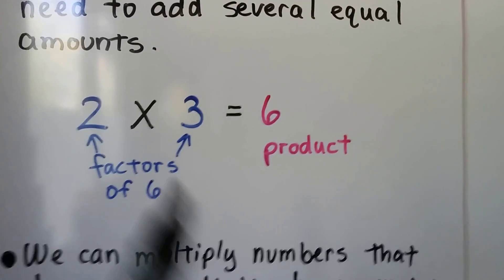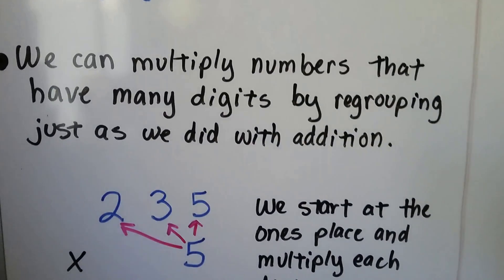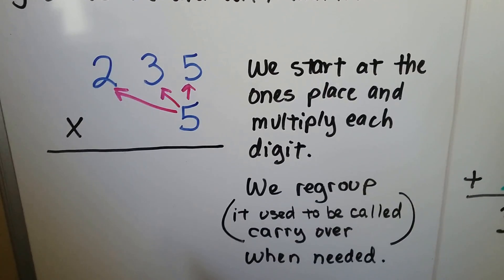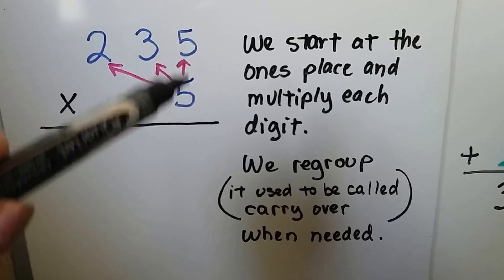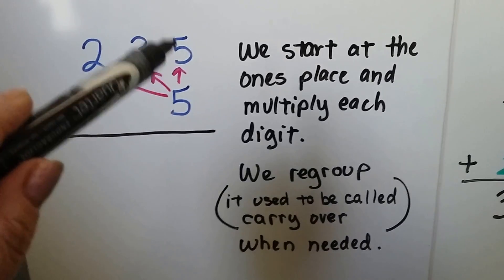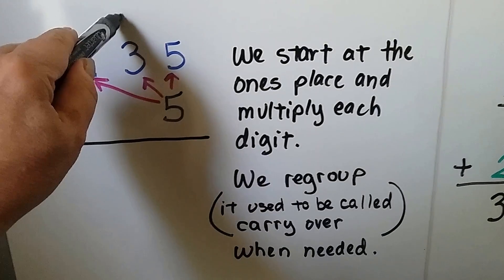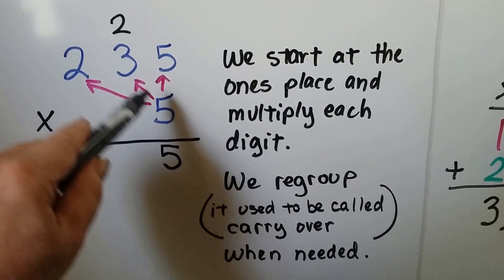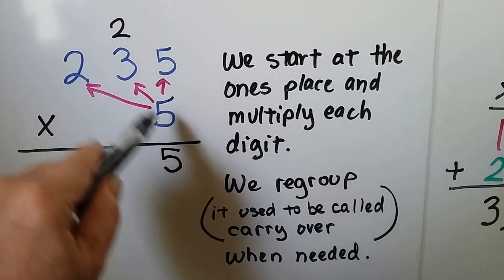We can multiply numbers that have many digits by regrouping, just as we did with addition. We start at the ones place and multiply each digit. We regroup — it used to be called carryover back in the day. So we do five times five, which is 25. Because we can't write 25 here, we regroup the two and put the five down.